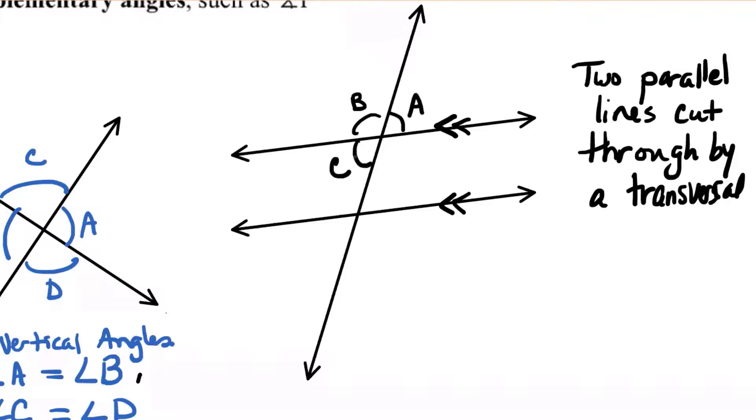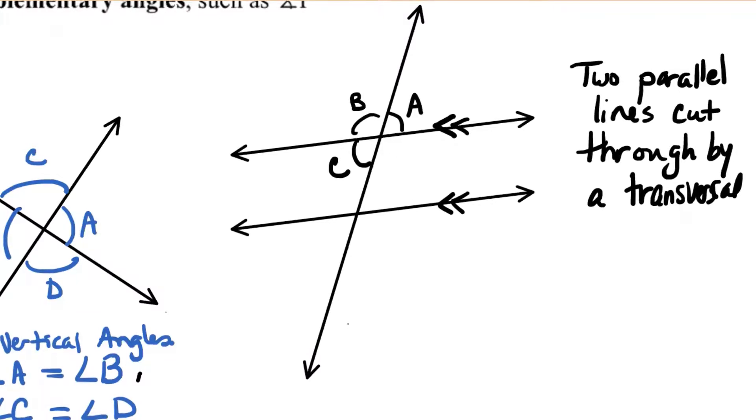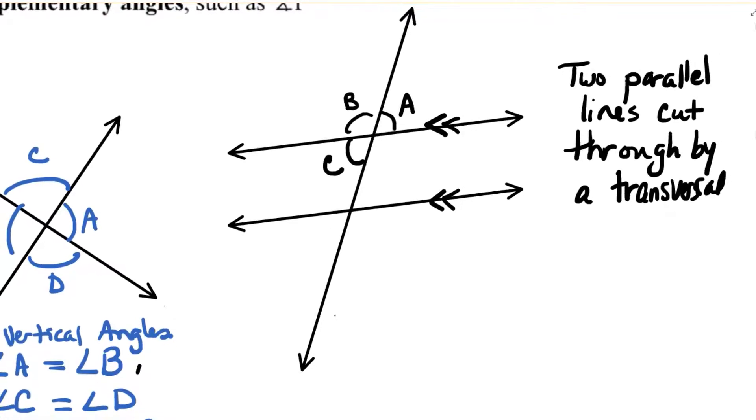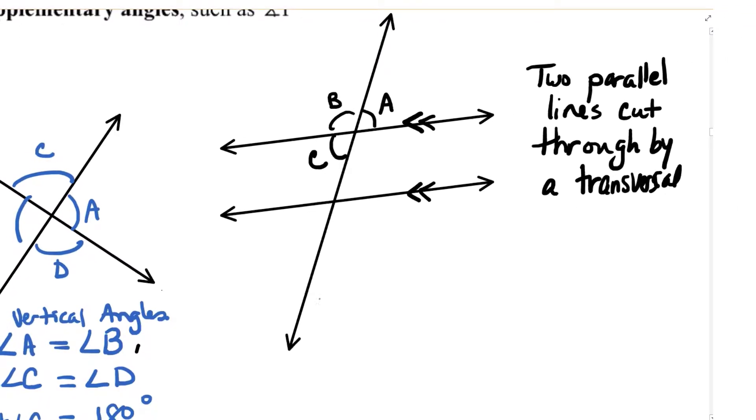Angle A, and I'm going to label this angle C. Those are vertical to each other. They're across through the vertex. So angle A would be equal to angle C. But there are other relationships that we have not discussed yet that are unique to this diagram. And I want to focus on those.